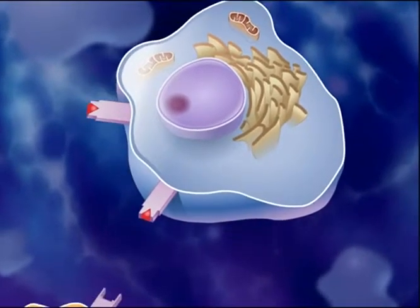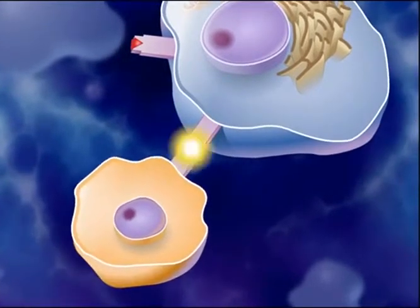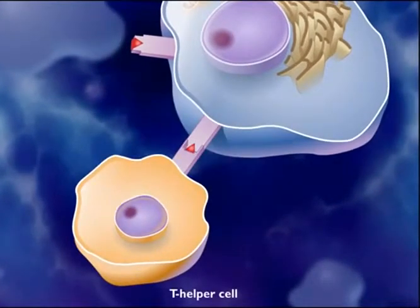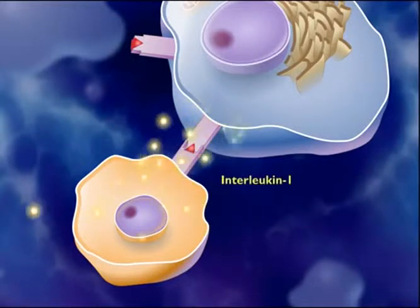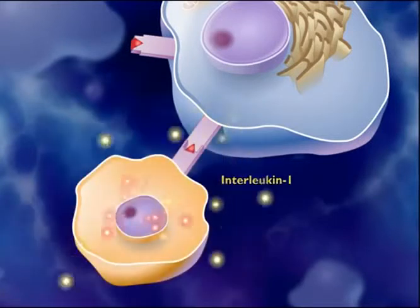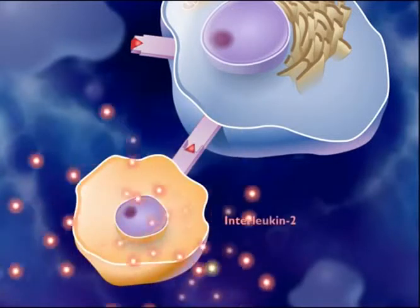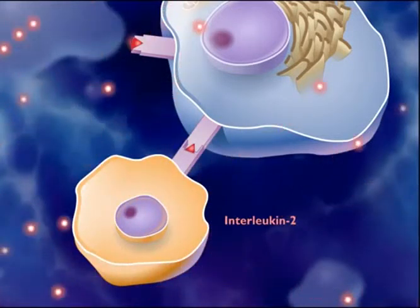An antigen-presenting macrophage interacts with a T-helper cell that can recognize the same antigen. During the interaction, the macrophage releases a chemical alarm signal called interleukin-1, which stimulates the T-helper cell to secrete interleukin-2.